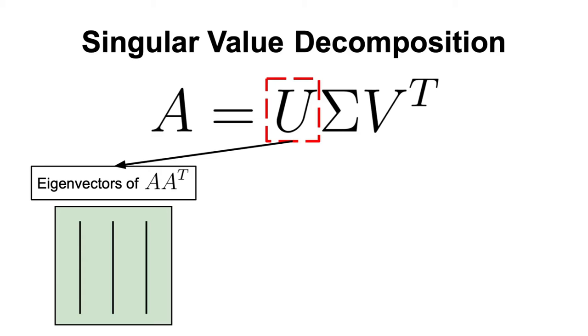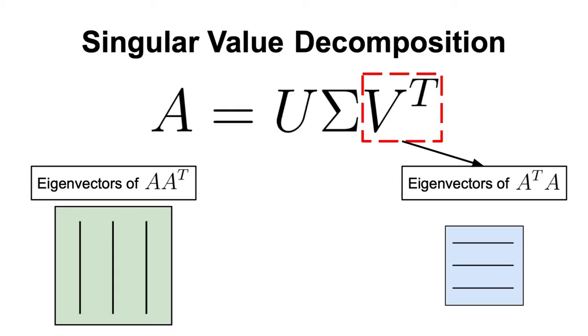V is also an orthogonal matrix which contains the eigenvectors of A transpose A, also known as the right singular vectors of A.